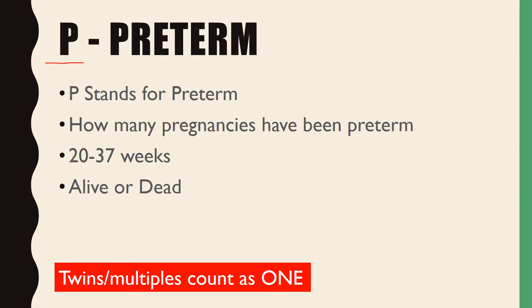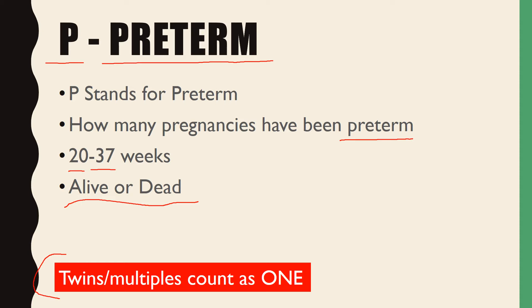The next letter is P, which stands for Preterm — pretty similar to Term, except it refers to how many pregnancies have been preterm. Preterm is described as after 20 weeks but below 37 weeks. Again, it includes alive or stillborn births, and twins or multiples count as one pregnancy.